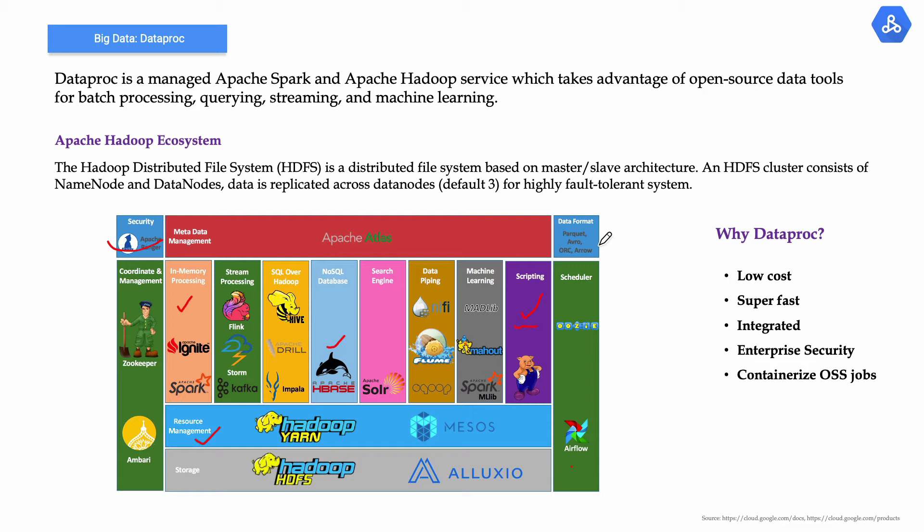It is super fast. Without Dataproc, it can take from five to 30 minutes to create a Spark and Hadoop cluster on-premises or through any infrastructure-as-a-service provider. By comparison, Dataproc clusters are quick to start, scale, and shut down, with each operation taking 90 seconds or less on average. It's completely integrated - Hadoop itself can only solve data processing job requirements, but it needs integration to different services like BigQuery, Cloud Storage, Bigtable, and logging and monitoring.